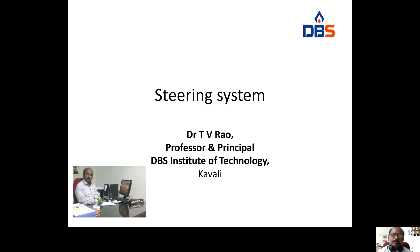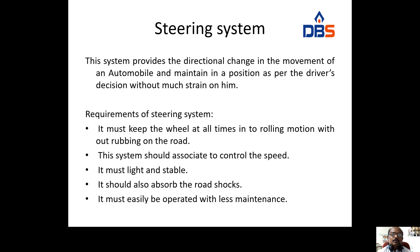How does the steering system control the automobile? What are the mechanisms involving the steering system? What are the different components? First of all, we discuss what is the steering system. This system provides the direction of change in the motion of an automobile, and maintains a position as per the driver's decision.